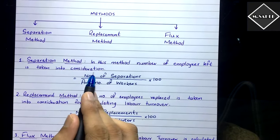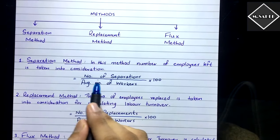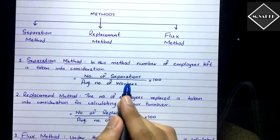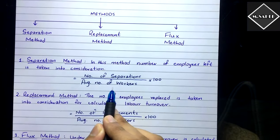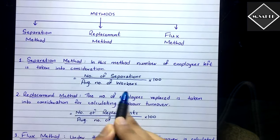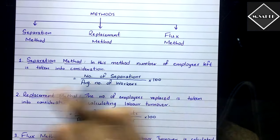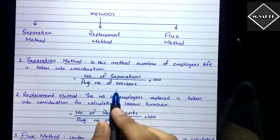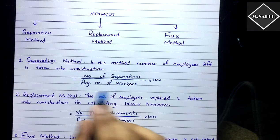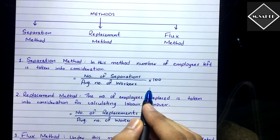In the separation method, the number of employees who have left the organization is taken into consideration. The formula is: number of separations divided by average number of workers, multiplied by 100. Average number of workers is calculated as: number of employees at the beginning plus number of employees at the end of the period, divided by two.